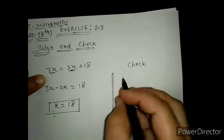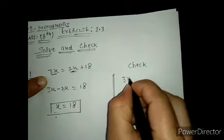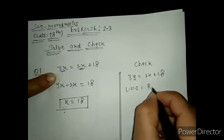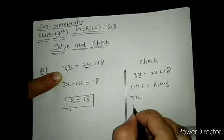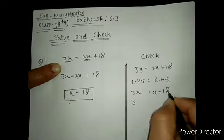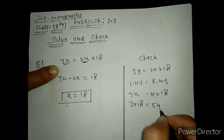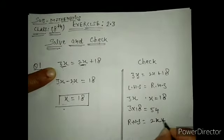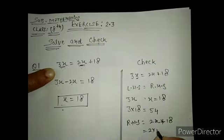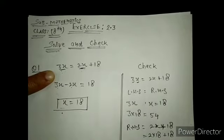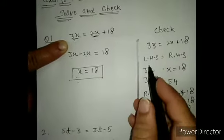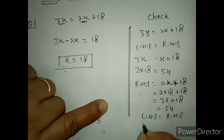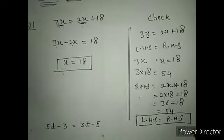Now we have to check the value. See the given equation: 3x equals 2x plus 18. The value of x is 18. On the left hand side, 3 times 18 equals 54. On the right hand side, 2x plus 18 equals 2 times 18 plus 18, which is 36 plus 18, which is also 54. So left hand side equals right hand side — checked and verified. Your value is correct.